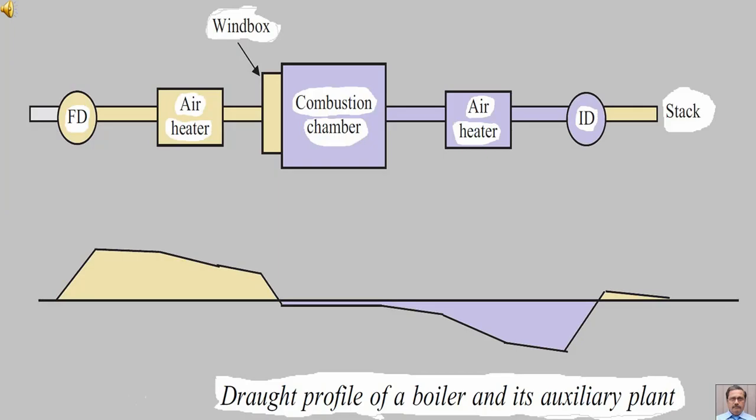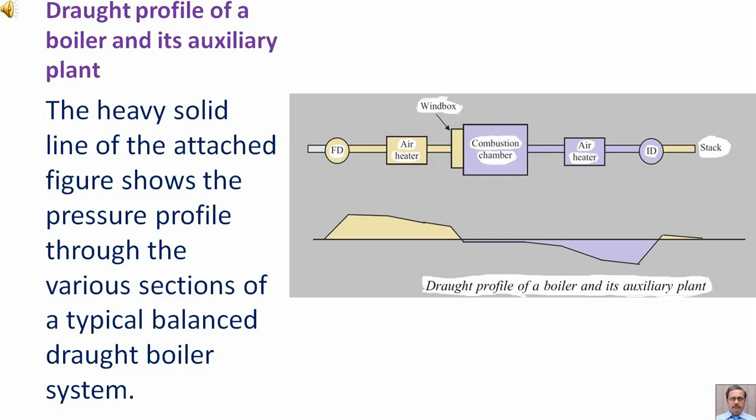Draft Profile. Draft profile of a boiler and its auxiliary plant. The heavy solid line of the attached figure shows the pressure profile through the various sections of a typical balanced draft boiler system.